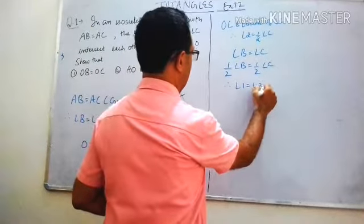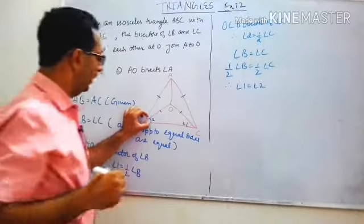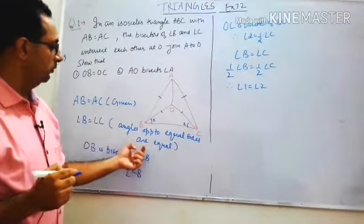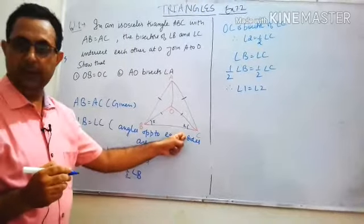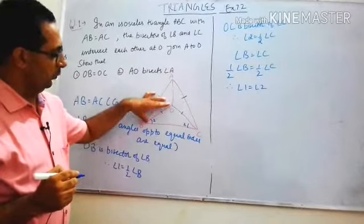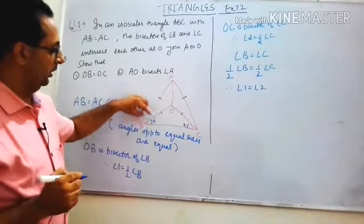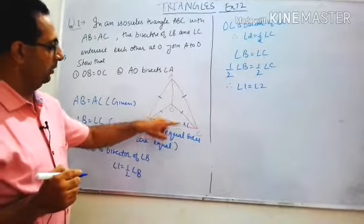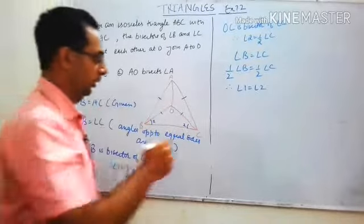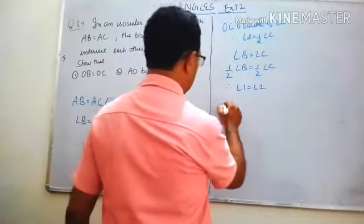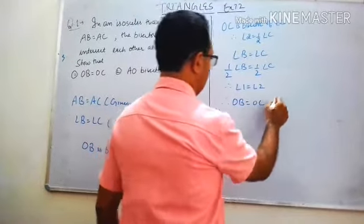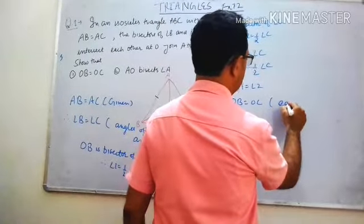OC is the bisector of angle C, so angle 1 equals angle 2. OB and OC are bisectors, therefore AB is equal to OC — equal sides correspond to equal angles.